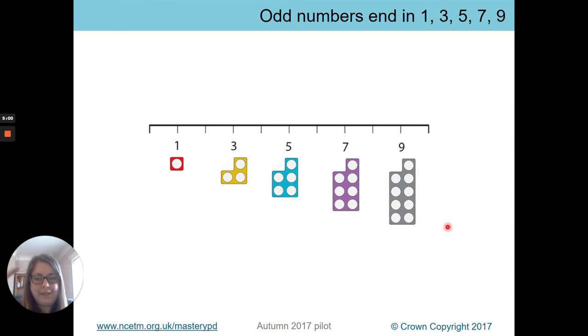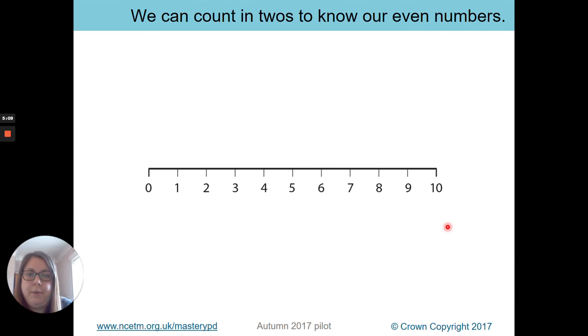And like I say, you can relate it to bigger numbers when you've definitely secured in knowing your odd and even numbers. So we can count in twos to know our even numbers and we're good at counting in twos, aren't we? So we start at zero and we go two, four, six, eight, ten. And we could keep going and it would still, as long as we're counting in twos, for our even numbers, we would just keep going, wouldn't we, counting in even numbers.